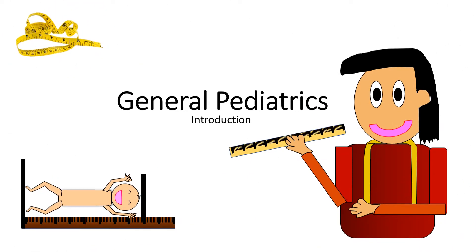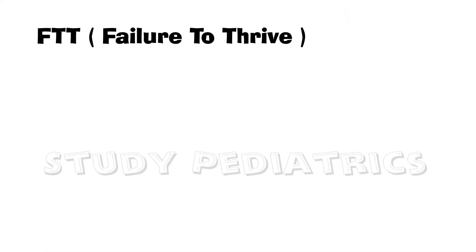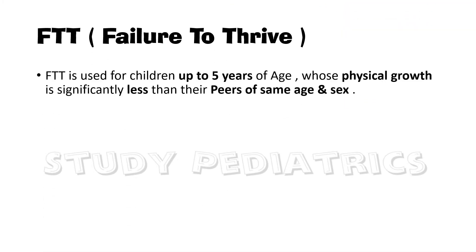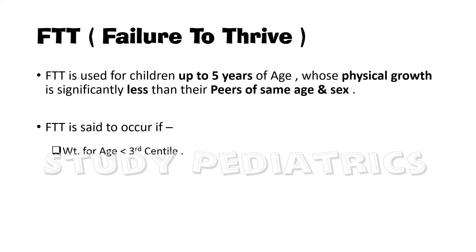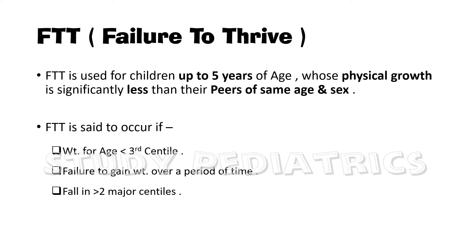General Pediatrics. Let's start with FTT or Failure to Thrive. FTT is the term used for children up to 5 years of age whose physical growth is significantly less than their peers of the same age and sex. FTT is said to occur if weight for age is less than the 3rd centile, failure to gain weight over a period of time, and fall in more than 2 major centiles. Any one of the above indicates FTT.